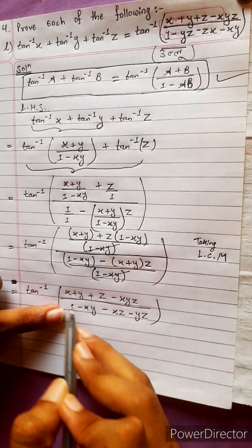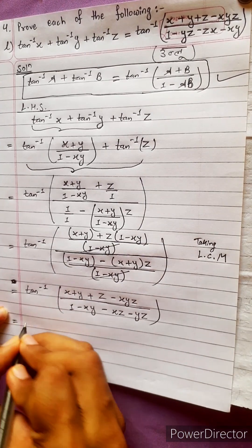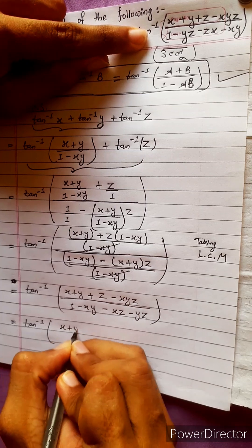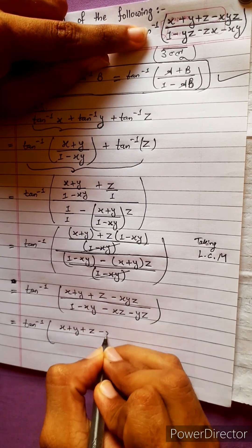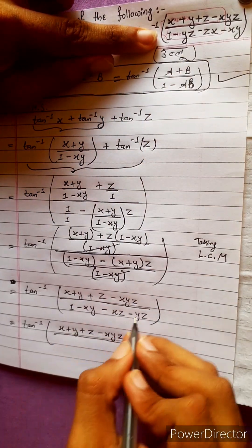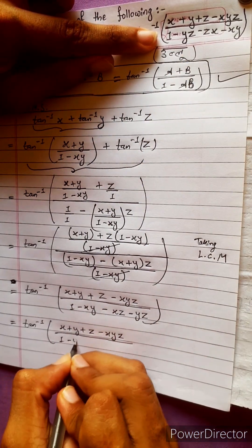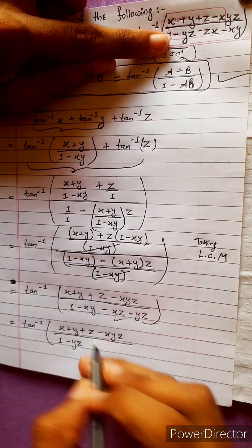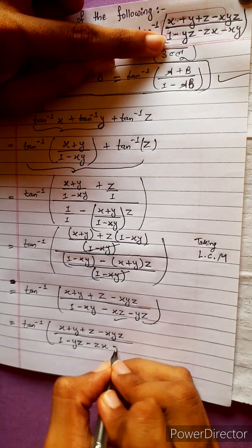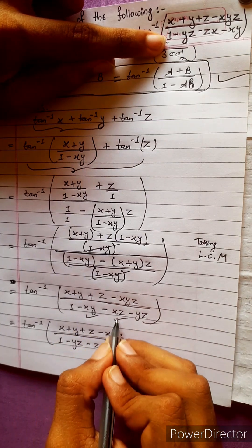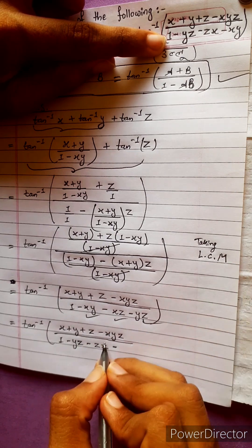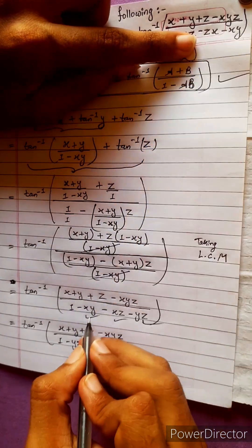What we have to prove: x plus y plus z minus xyz, divided by 1 minus yz minus zx minus xy. Let's write it here. This gives tan inverse of x plus y plus z minus xyz, divided by 1 minus yz minus zx minus xy.